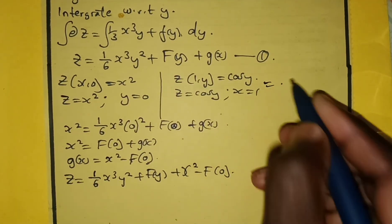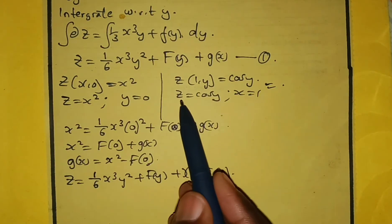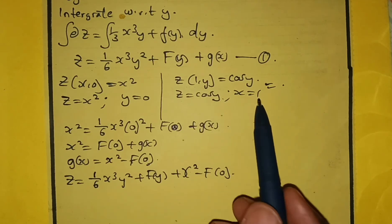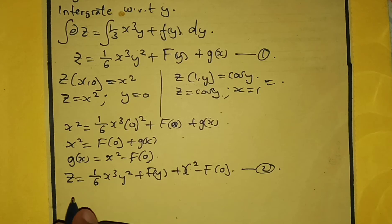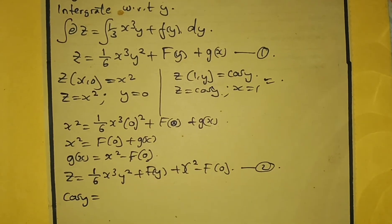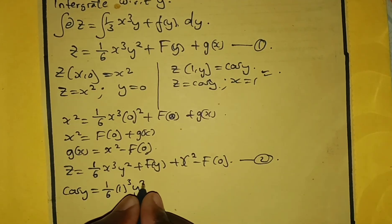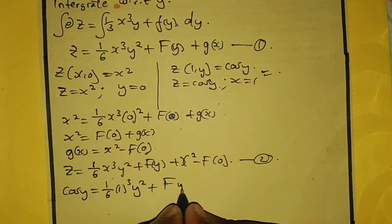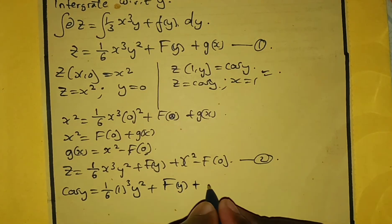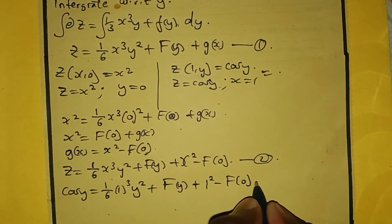Now we apply our second condition: z(1, y) = cos y, so z = cos y and x = 1. Substituting into equation number 2: cos y = (1/6)(1)³y² + F(y) + 1² − F(0).